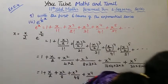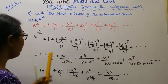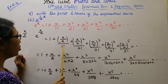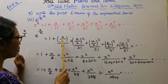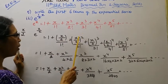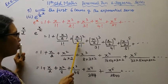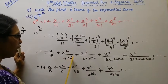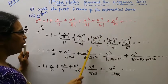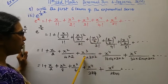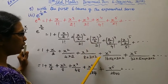Equals 1 plus x by 2, 1 factorial is 1. x by 2, x square by 4. x square by 4, 2 factorial is 2 into 1. x cube, 2 cube is 8, by 3 factorial, 3 into 2.